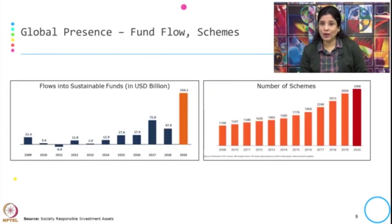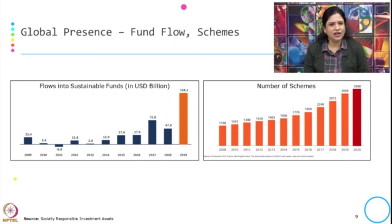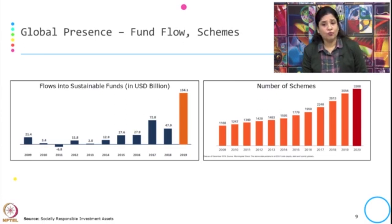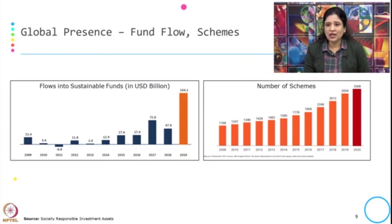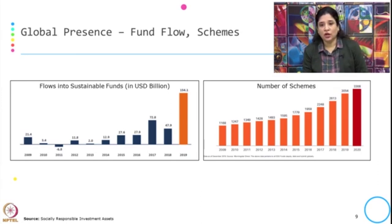This shows global fund flows and the number of schemes. Looking at flows into sustainable funds from 2009, there were reductions in 2010, 2011, and 2013, but there is very high positive growth in 2019. Similarly, the number of schemes under sustainable finance has been growing over time from 2009 to 2020.